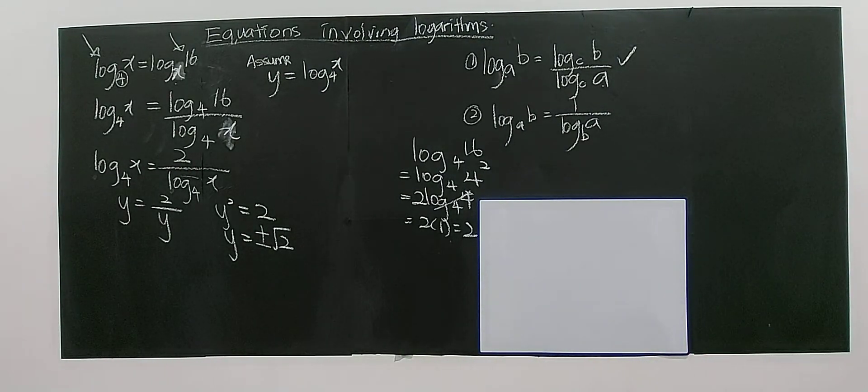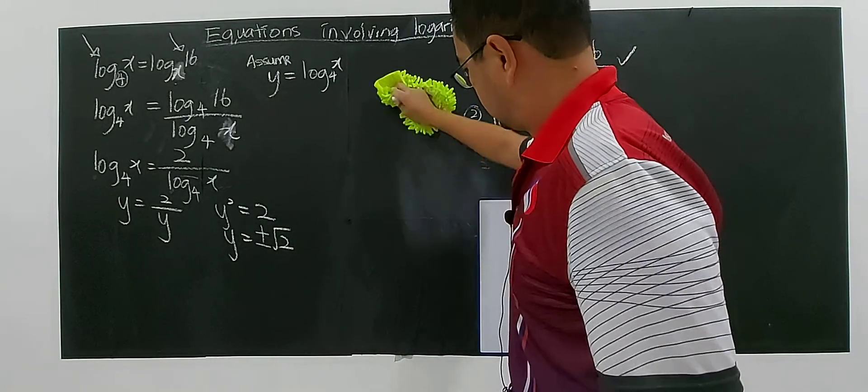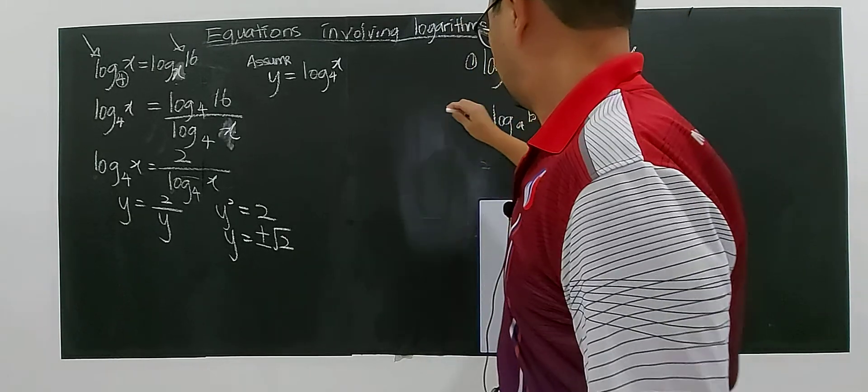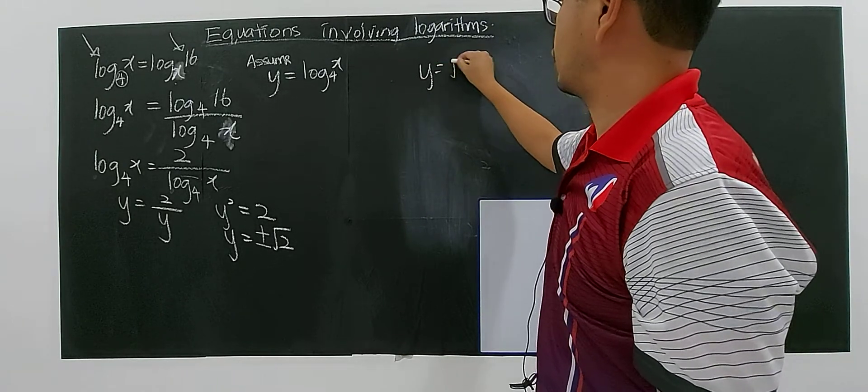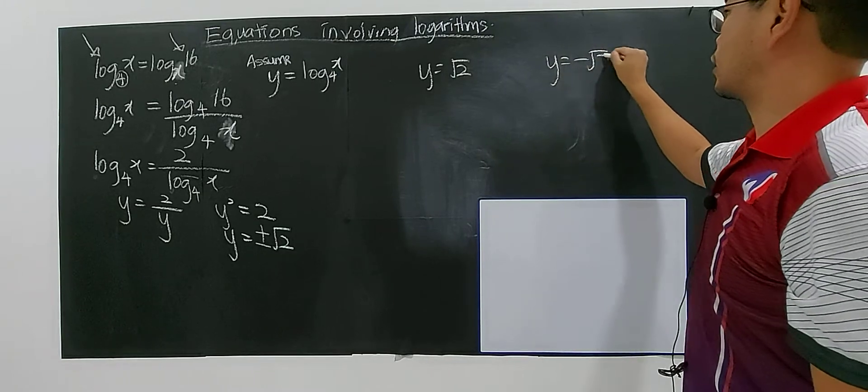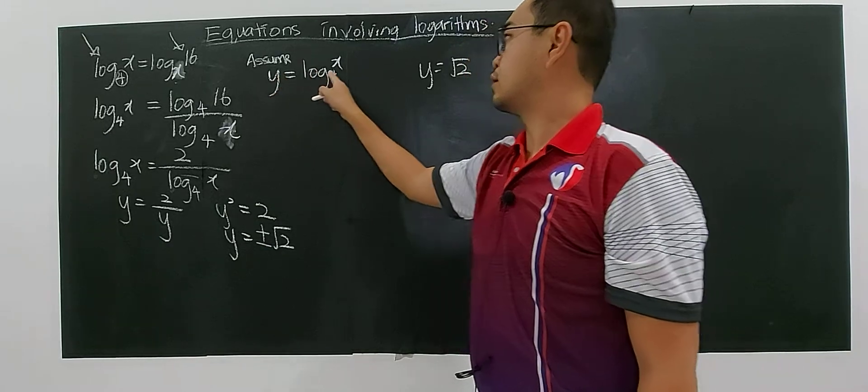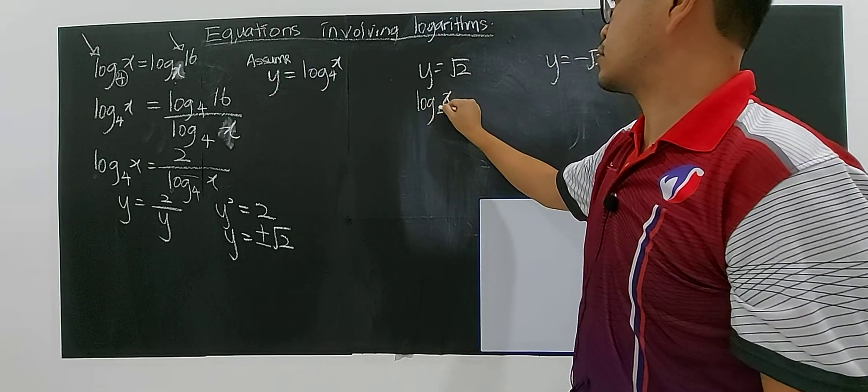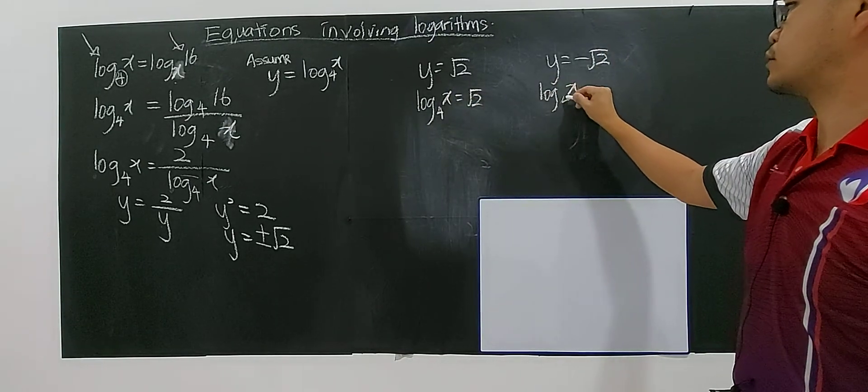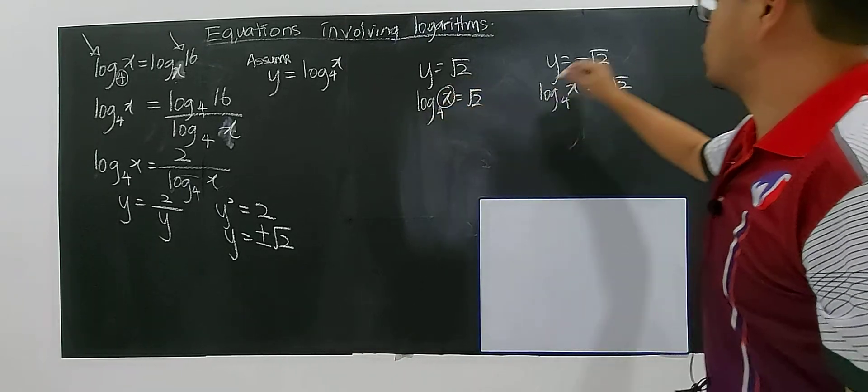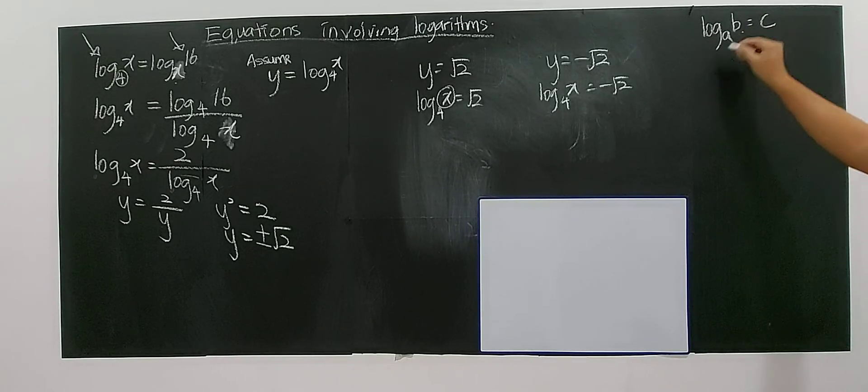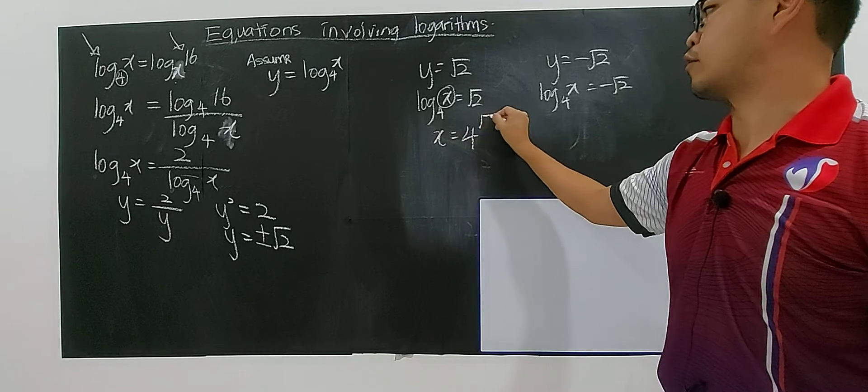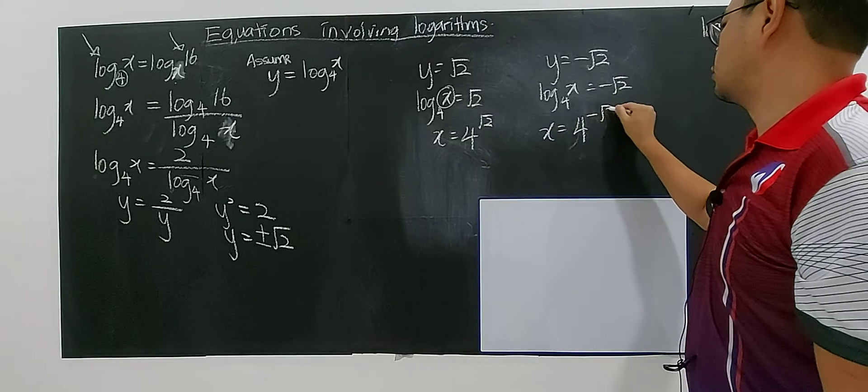Now Y is not the solution for this equation, you want to find X. You know that Y equals to square root of 2 or Y equals to negative square root of 2. What is Y? Y is log X to the base 4. So you have to apply log B base A equals to C, you can convert to index form. B equals to A to the power of C. Same thing also. X equals to 4 to the power of square root of 2, and X equals to 4 to the power of negative square root of 2. You can change to decimal to calculate the value.